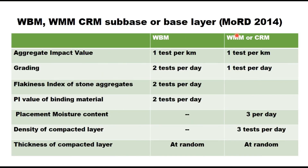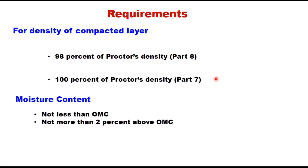MORD specifications are slightly different and cover three types of layers: WBM, WMM, and crusher run macadam when provided as a sub-base or base layer. Density of the layer can be determined by core cutting or sand replacement method. For high volume roads, density of the compacted layer should be at least 98% of Proctor density as estimated through heavy compaction. For low volume roads, it should be 100% of Proctor density as estimated using light compaction. The moisture content at site should not be less than OMC and not more than 2% above optimum moisture content.